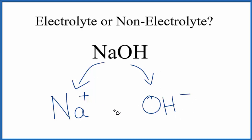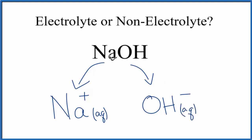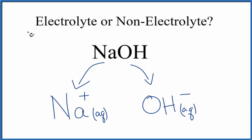So we have these two ions in water — we write AQ, which means aqueous, meaning dissolved in water. In answer to our question, NaOH, sodium hydroxide, breaks apart into its ions, so it's an electrolyte.